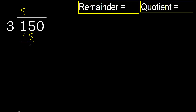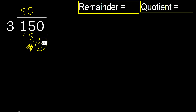Subtract — 0. Next: bring down 0. 0 is less, therefore next. That is not a number, therefore finish it — complete with 0, because here we finish it with this number.